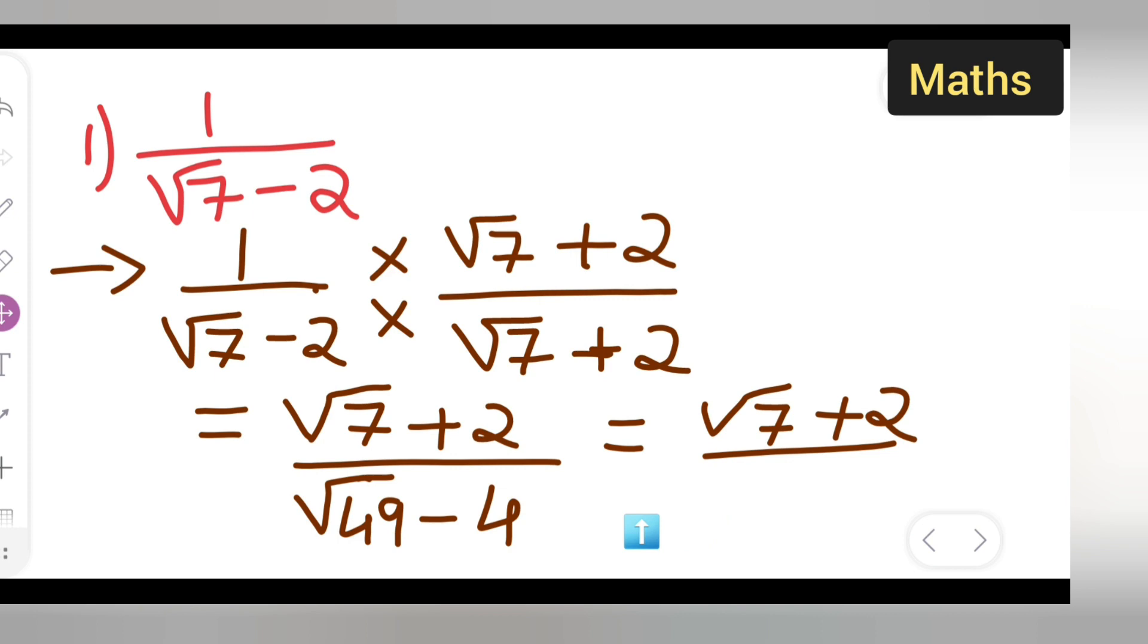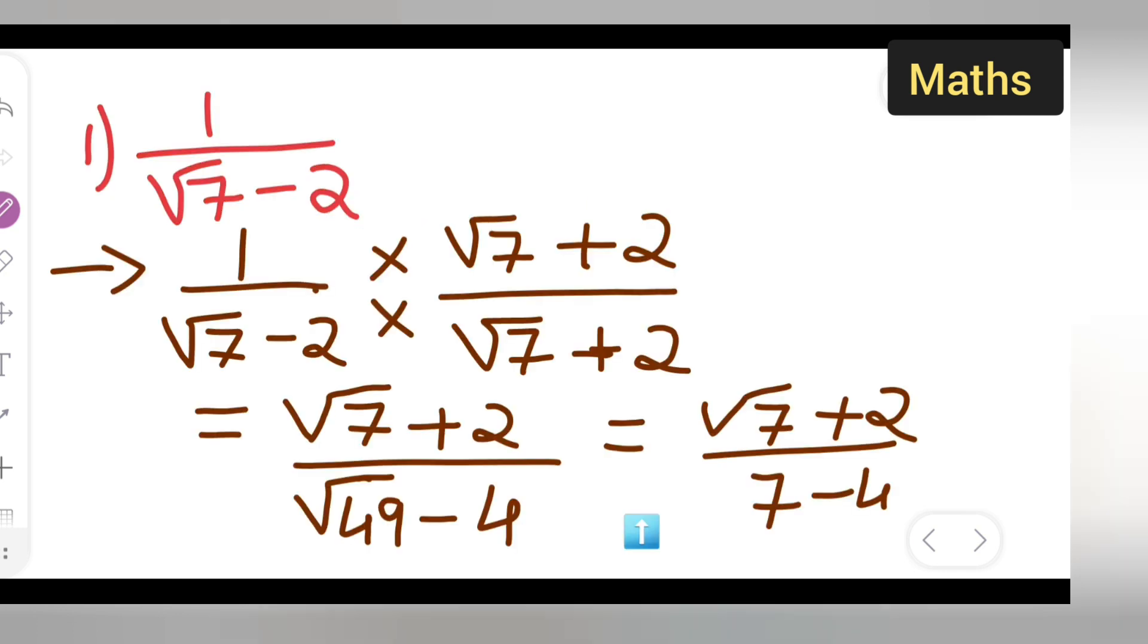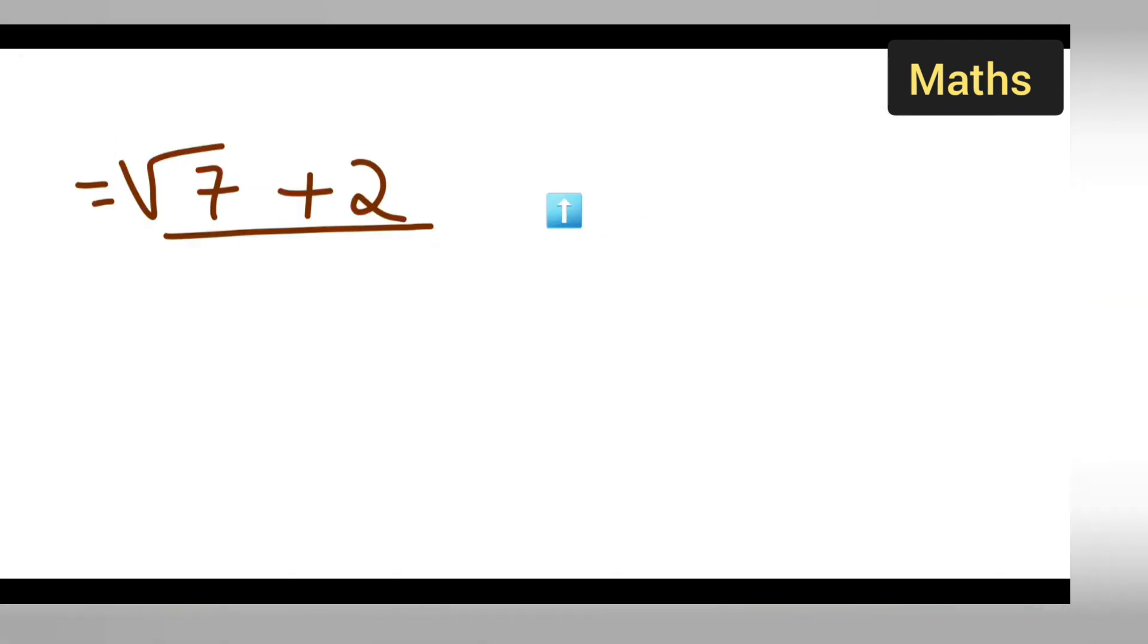Next step will be root 7. Now this is equal to root 7 plus 2 upon what you will get. So now 7 minus 4 will give you 3. Write down 3 over here. So I hope you will have understood today's class and thanks for watching.